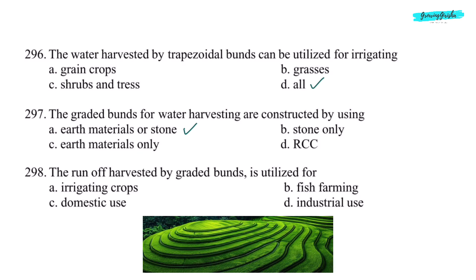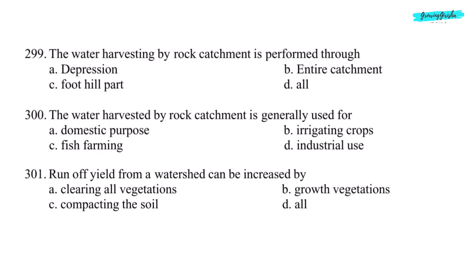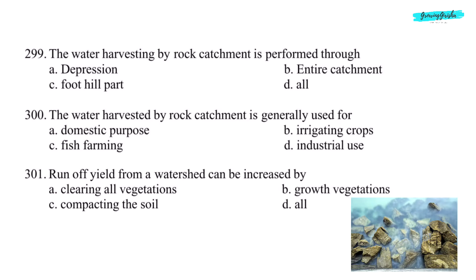Next question: the runoff harvested by graded bunds is utilized for — option A, irrigating crops. Next question: water harvesting by rock catchment is performed through — option A, depression.